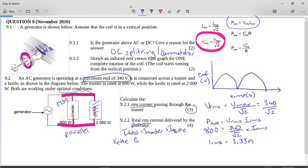P average is equal to V_RMS times I_RMS. Okay, so the kettle was 2000 watts, so 2000 equals 340 over root 2—remember it said they're operating optimally—times I_RMS. So the I_RMS for the kettle is going to be 8.32 amps.